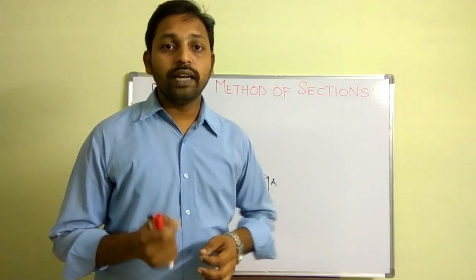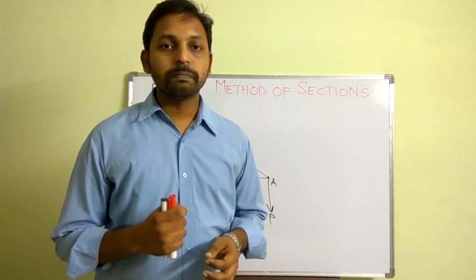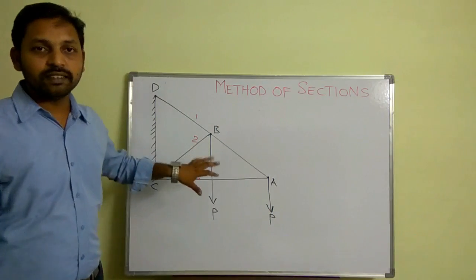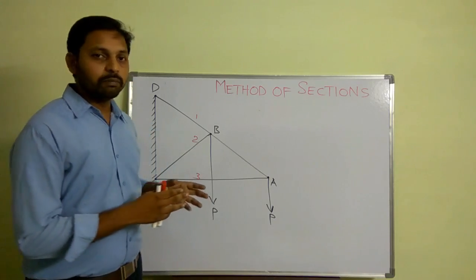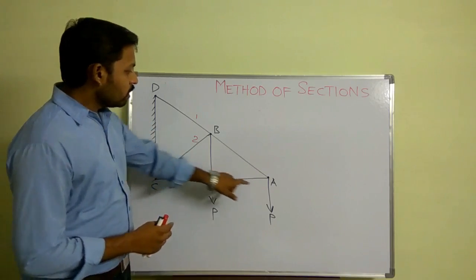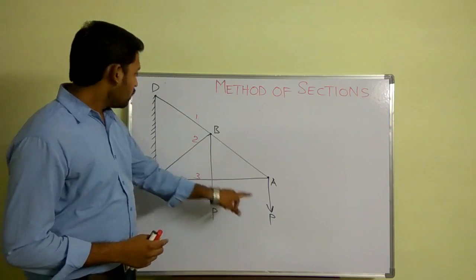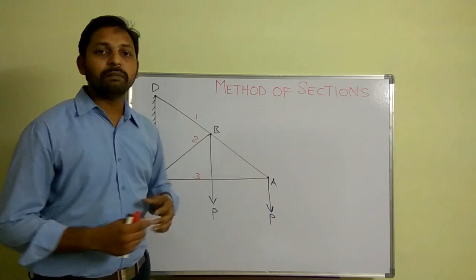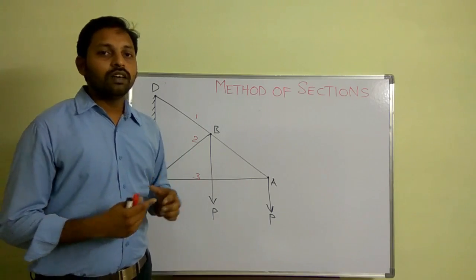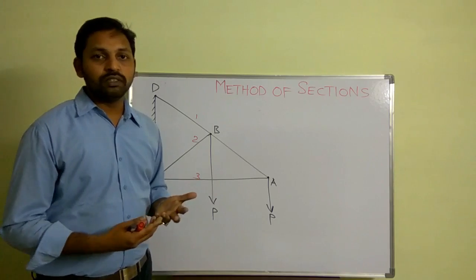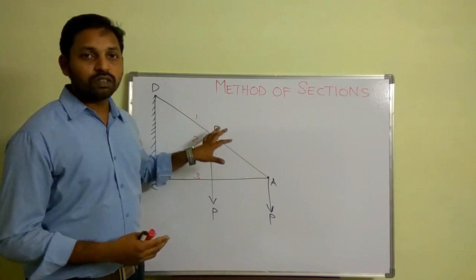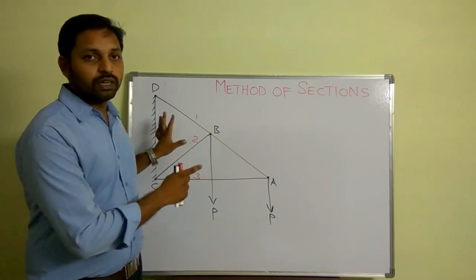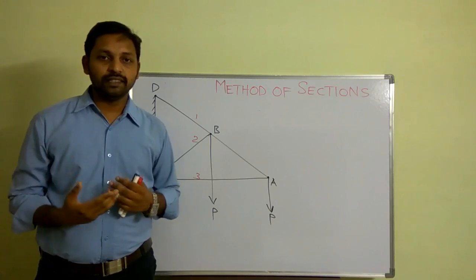In this session I would like to explain the method of sections with the help of an example. A truss is nothing but a system of connected members — AP is a member, BV is a member, CD is a member, and so on. These are connected by means of pin joints or welded joints, and the application of load may be at the joints only. That is the basic definition of trusses.